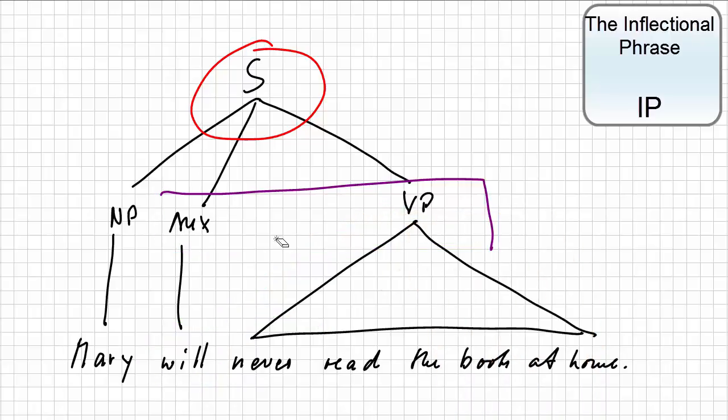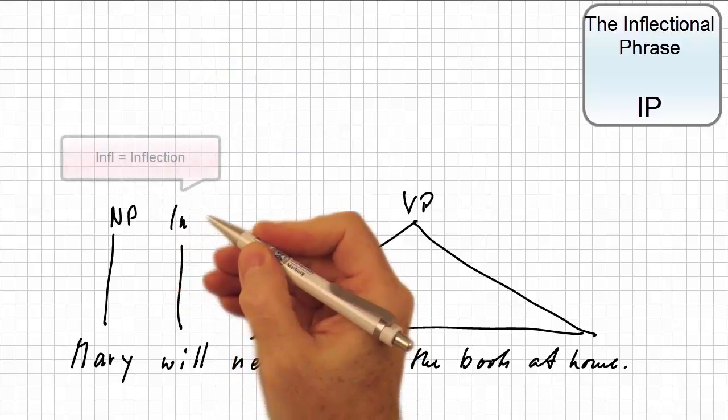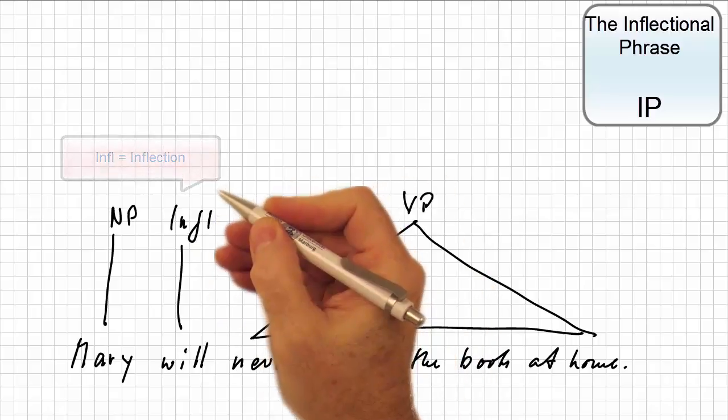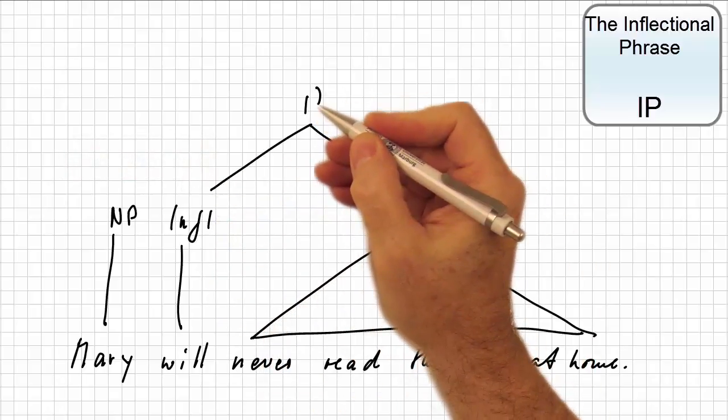So we have to revise the flat structure. First, we replace auxiliary by inflection. This is now inflection bar, or in short, i bar. And then we adjoin the verb phrase to i bar.